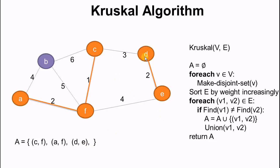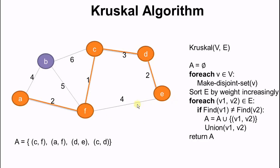Next is CD. Note that C, F, and A belong to the same disjoint set, and D and E belong to the same disjoint set, so C and D do not belong to the same set — so we merge them and push to A. Next is FE. Now A, F, C, D, and E all belong to the same disjoint set, so F and E belong to the same disjoint set, and we should not push this edge into A. Next is AB — A and B do not belong to the same disjoint set, so we merge and push.